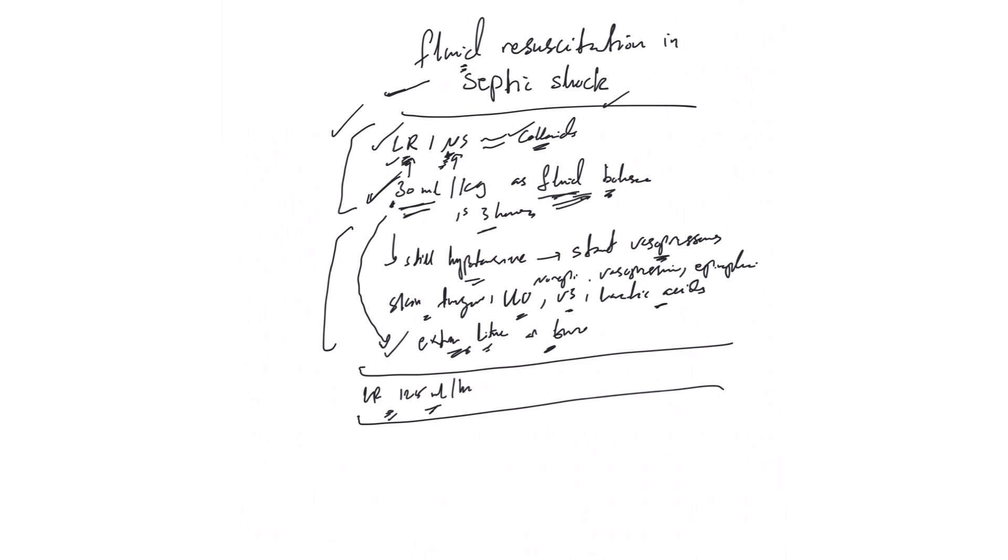If you finish these fluid boluses and the patient is still hypotensive, you start vasopressors. Now practically, sometimes the patient is so profoundly hypotensive you start fluid resuscitation and vasopressors at the same time. Two to three liters or 30 cc per kg. After that, use your clinical judgment if the patient needs another liter or two, but no more than that. The studies showed we used to give four or five liters of IV fluid, but this showed there is no difference in mortality or outcome if you give 30 ml per kg compared to the larger amount we used to do.